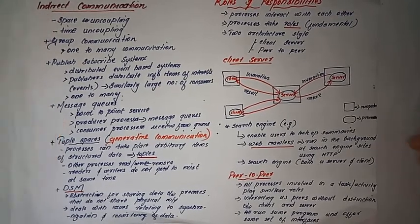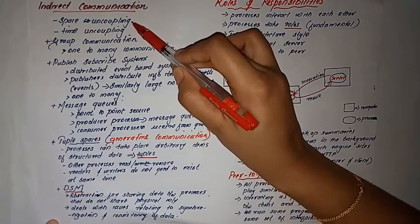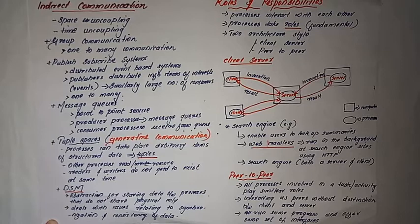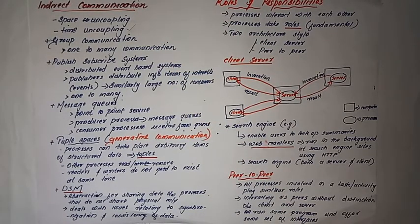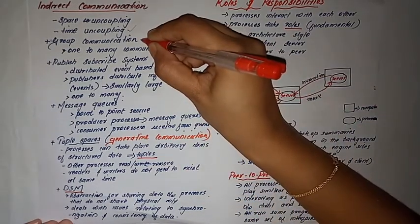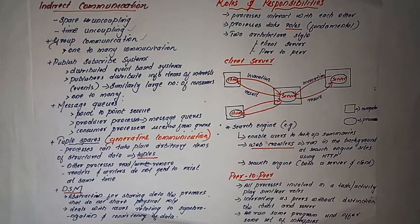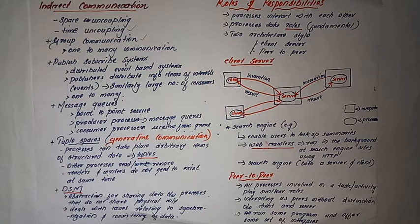Indirect communication involves space uncoupling and time uncoupling. With space uncoupling, communication is not direct — there is no need to know the other party. There is no direct channel. With time uncoupling, the sender and receiver do not need to exist at the same time. Indirect communication also supports one-to-many communication, called group communication.